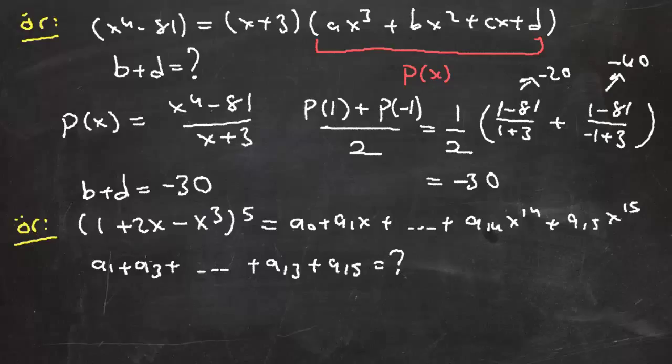Şimdi bu ifadeyi açıp tek tek bu katsayıları bulup toplamak bayağı zor bir iş. O yüzden biz buradaki ifadeye P(x) polinomu diyecek olursak aradığımız şey tek dereceli terimlerin katsayıları toplamı. Yani eşitliğin diğer tarafındaki polinomun tek dereceli terimlerinin katsayıları toplamı. Ve bu neye eşit? Bu ifade tek dereceli terimlerin katsayıları toplamı, o da [P(1) - P(-1)]/2'ye eşit.